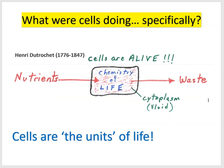In the 1800s, Henri Dutruchet helped us understand what cells were. They were compartments with a boundary called the cell membrane, and inside that chamber was a fluid called the cytoplasm where chemistry was occurring. Dutruchet argued cells are the units of life, and they need to acquire nutrients from the environment and eliminate waste products.